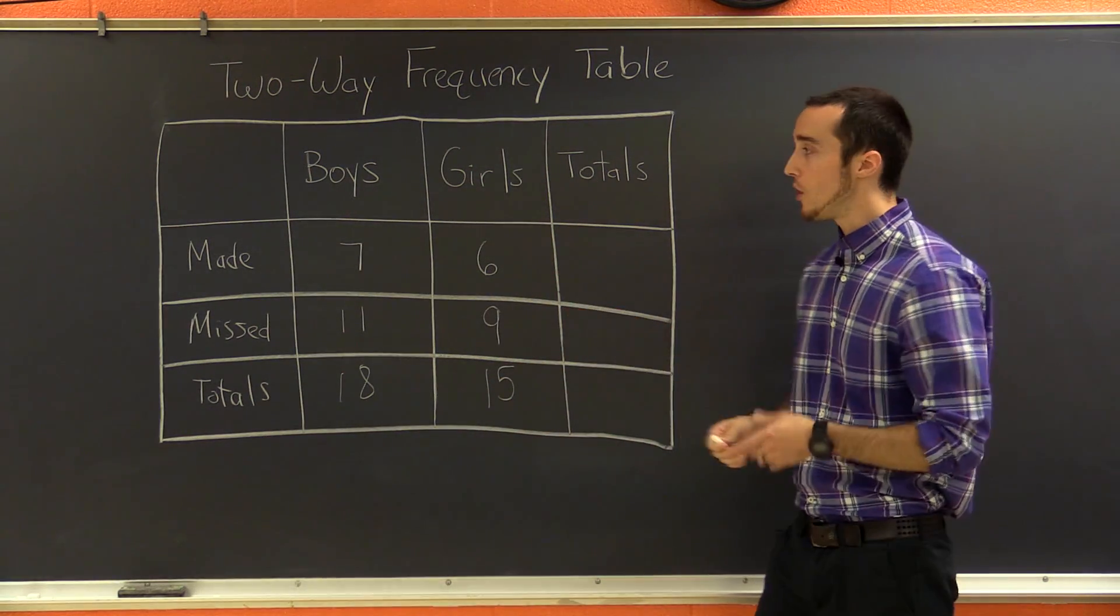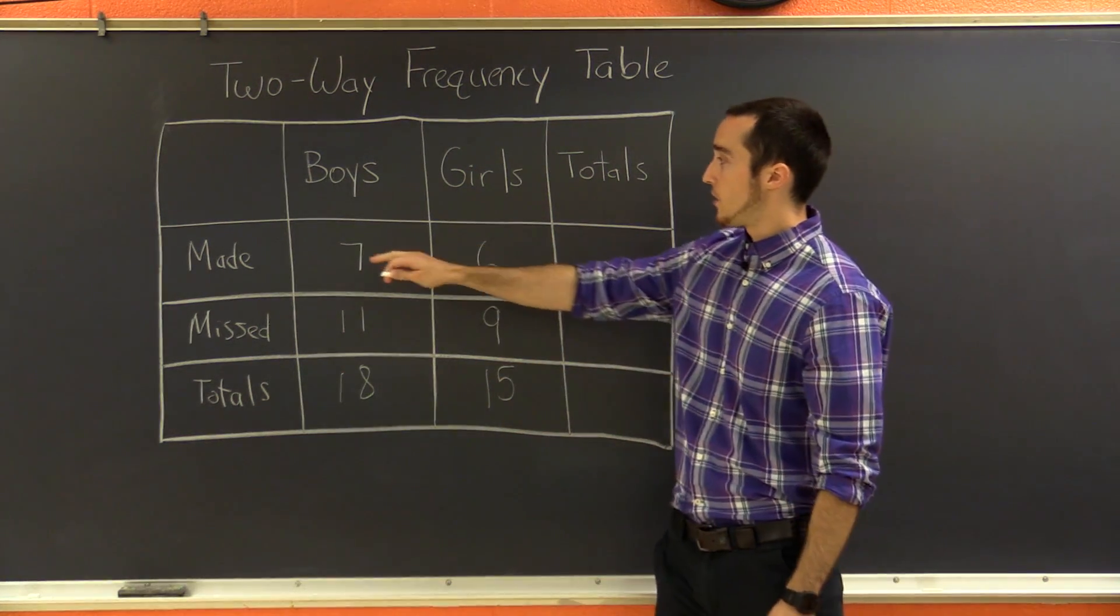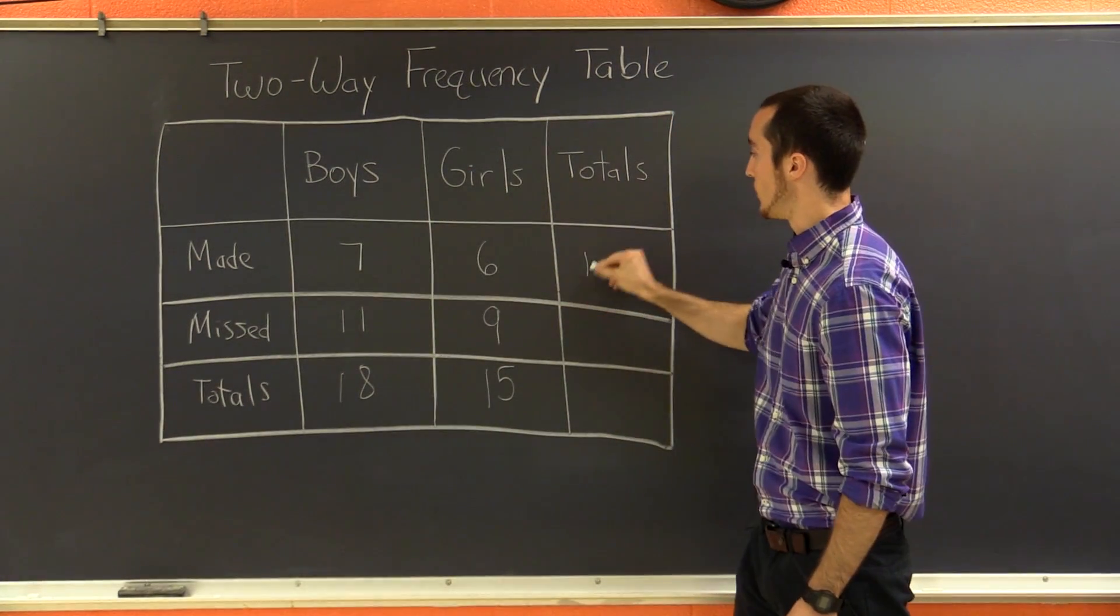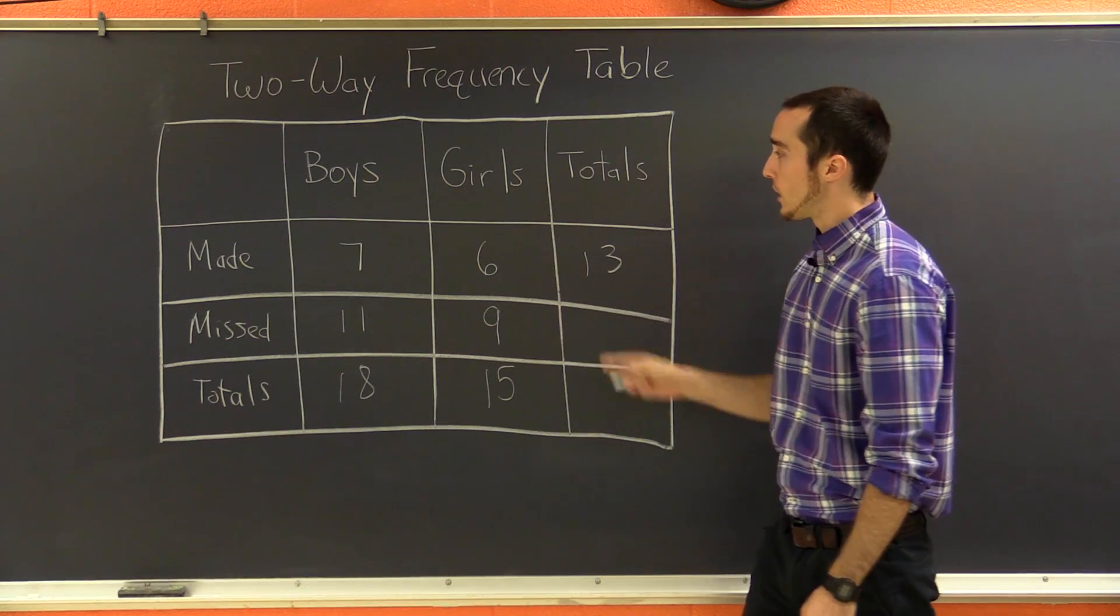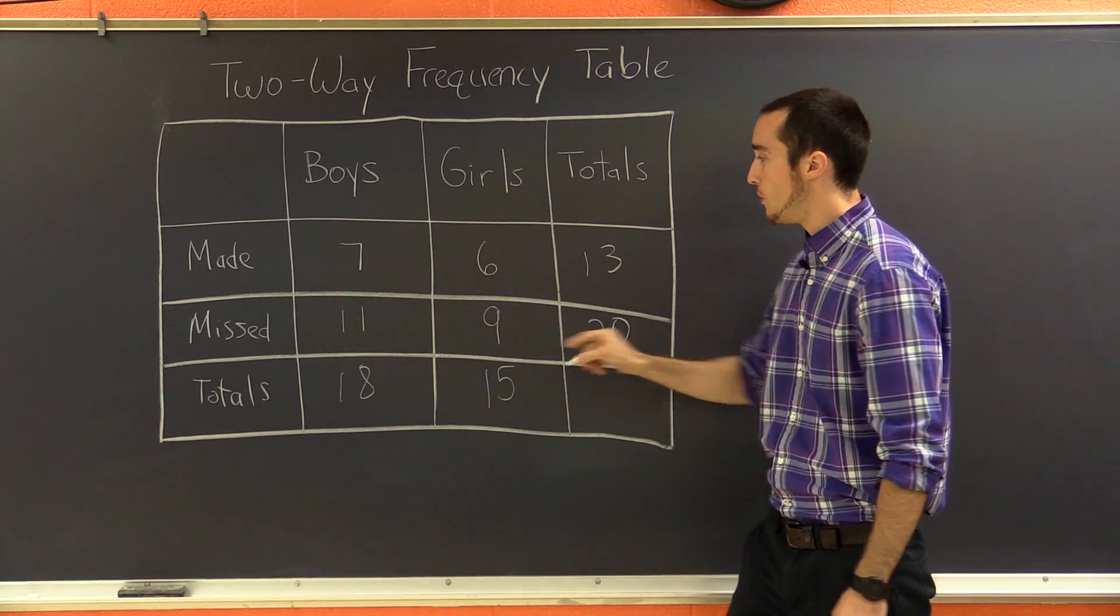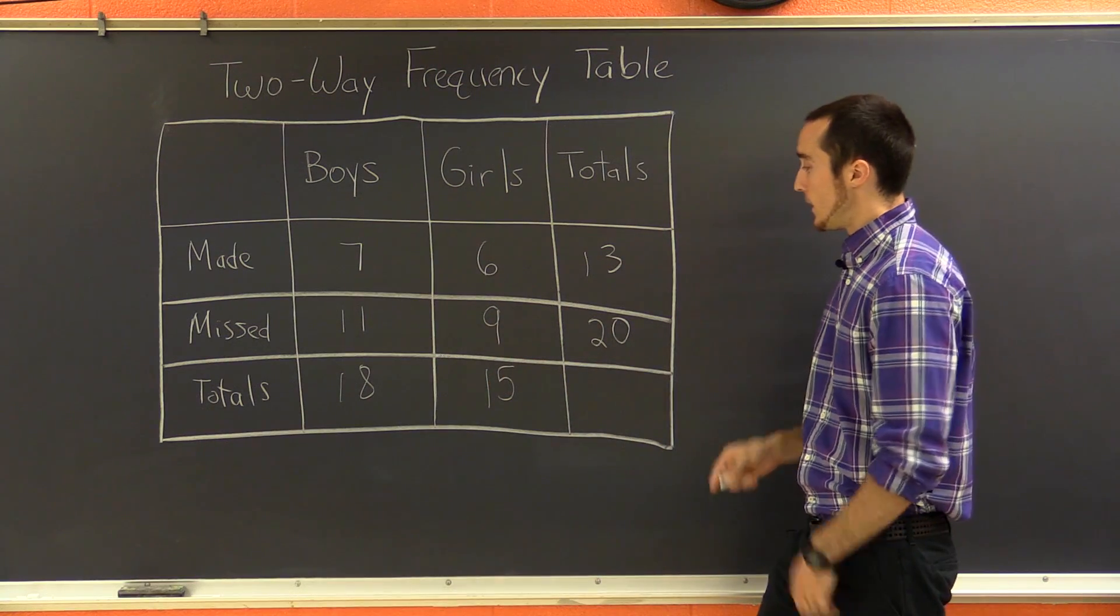Do the same thing in the rows. If we look at the total number of people who made a basket, regardless of gender, 7 plus 6 is 13. We can do the same thing and figure out that there are 20 people who missed a basket because 11 plus 9 is 20.